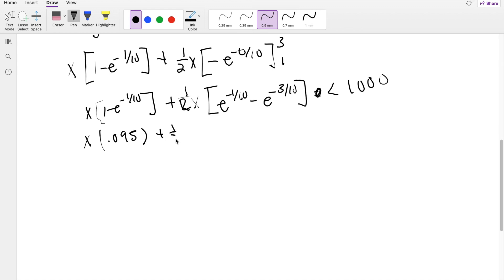And right here, one half X, E to the negative 1 tenth minus E to the negative 3 tenths is equal to 0.164019.